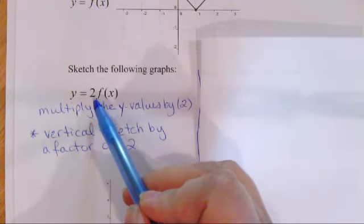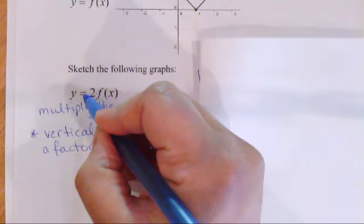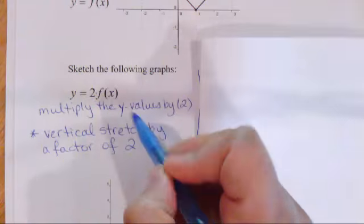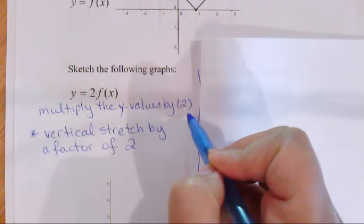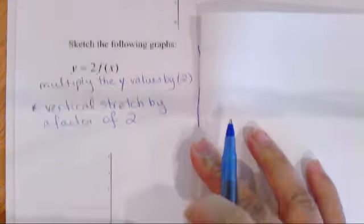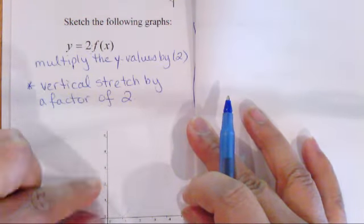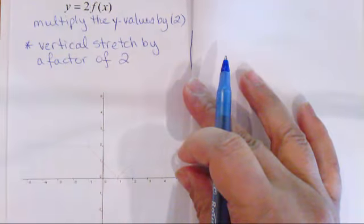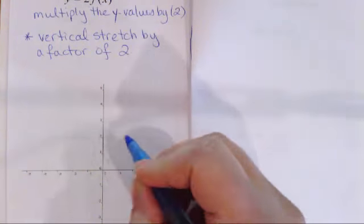Looking at this first example, we've got y equals 2 f of x. Notice this 2 is placed on the outside of f of x — it's applying to the entire f of x. So all of the y values are going to be multiplied by 2. Everything is going to be stretched and it's going to become twice as long.